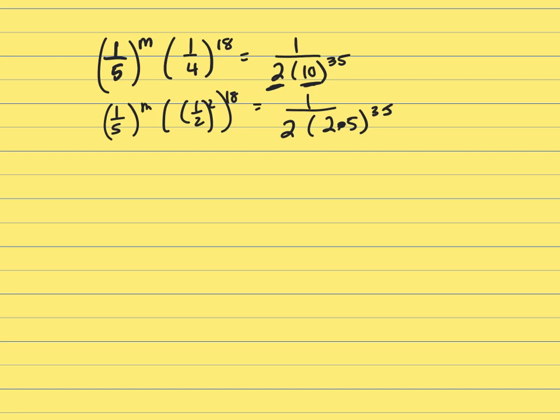So 1 to the M is just going to be 1. So I can rewrite that as 1 over 5 to the M. And this will be (1/2) to the 2 times 18, which is 36.